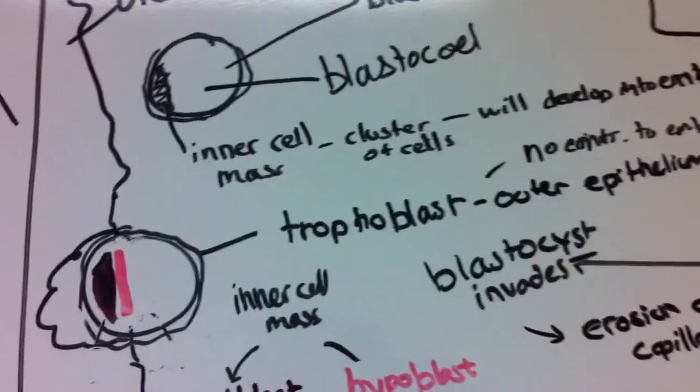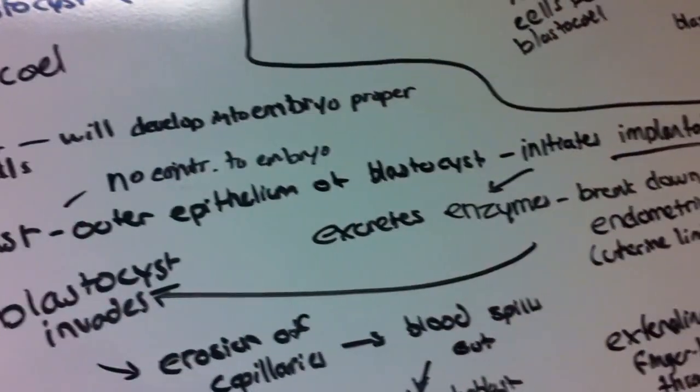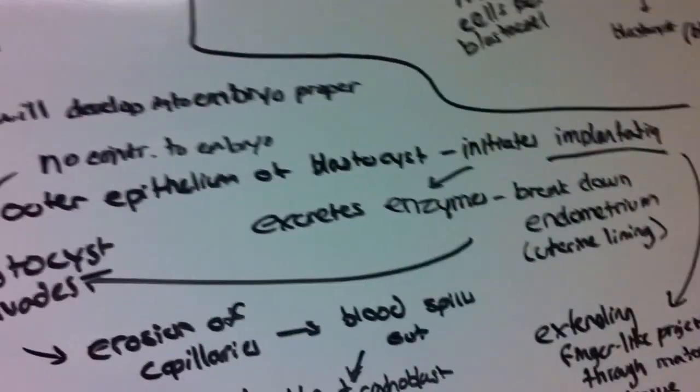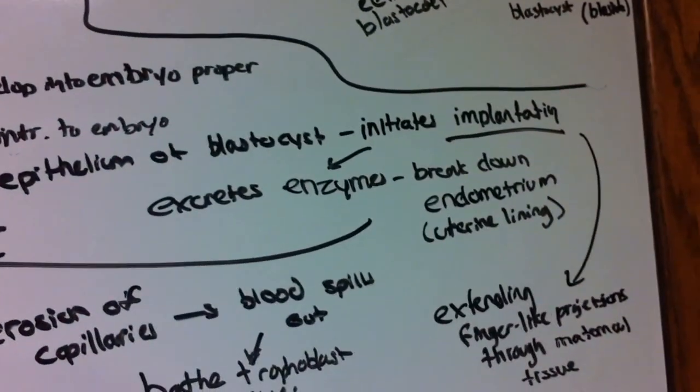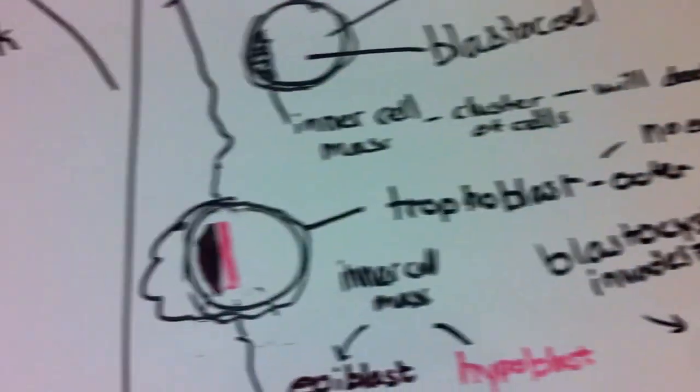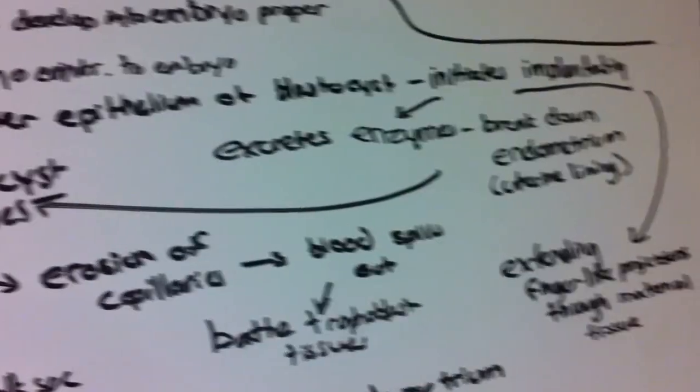On the outside is our trophoblast. The trophoblast is the outer epithelium of the blastocyst. It initiates the implantation by secreting these little enzymes that will break down the endometrium. In this case, endometrium means the uterine lining.